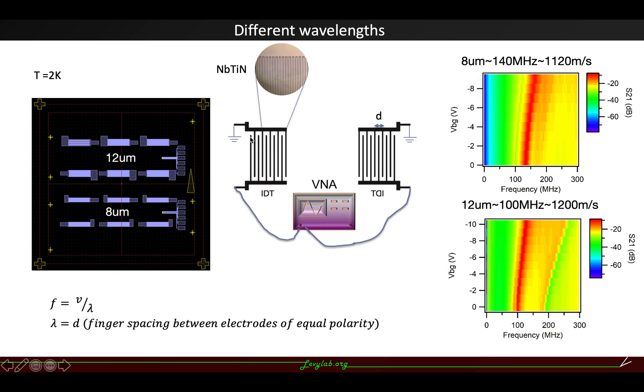Moreover, we pattern the IDT structure with NbTiN, which is a superconducting material under 15 Kelvin, and we pattern a pair of them. We pattern different wavelengths of these pairs: one is 8 micrometers and the other is 12 micrometers.